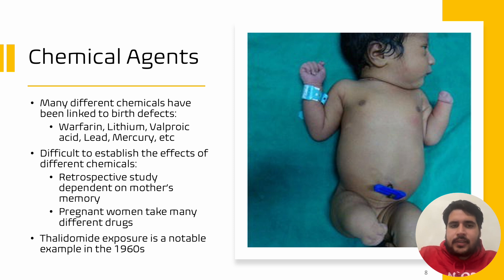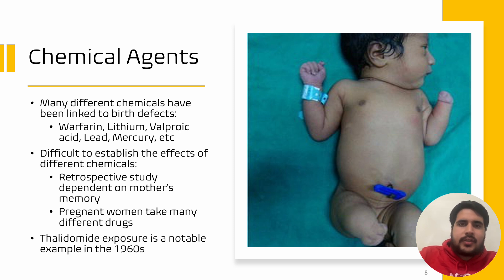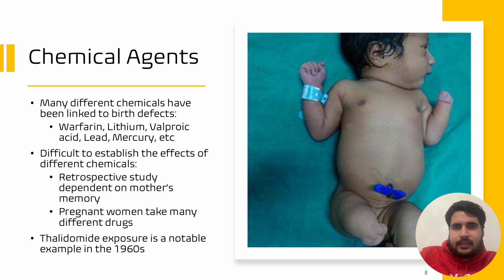It is very difficult for scientists to establish the effects of different chemicals because of two main reasons. First, most studies are retrospective studies and are dependent on the mother's memory. Secondly, pregnant women take many different drugs and it is very hard for scientists to determine, for example, which chemical was causing the abnormality. Thalidomide exposure is a very notable and infamous example of birth defects being caused by a medication, which happened in the 1950s and 1960s.